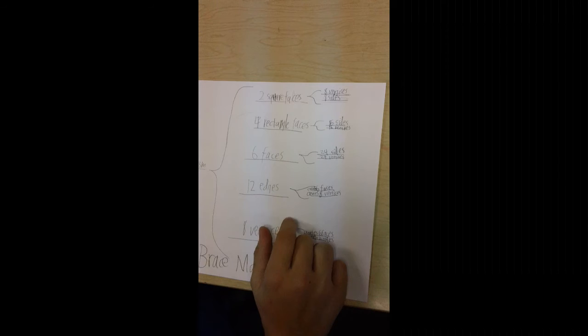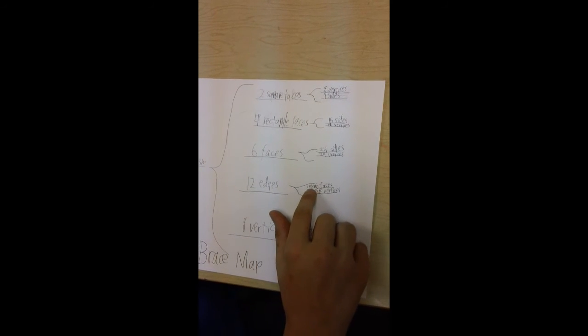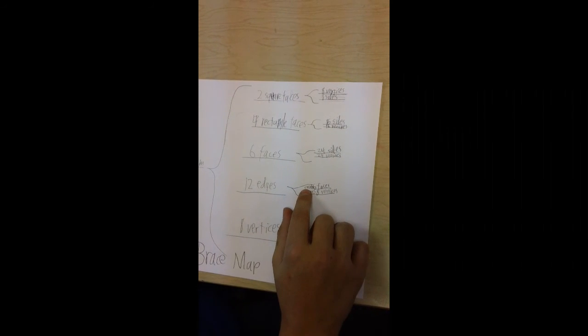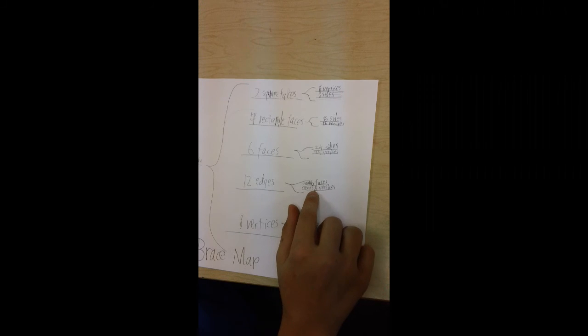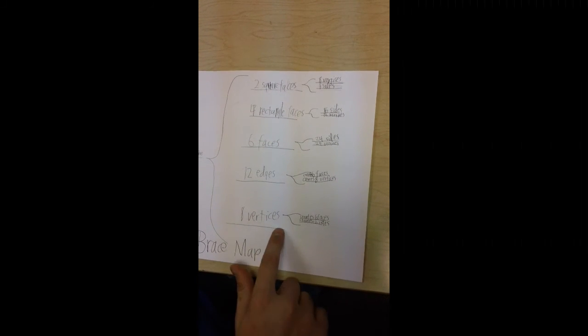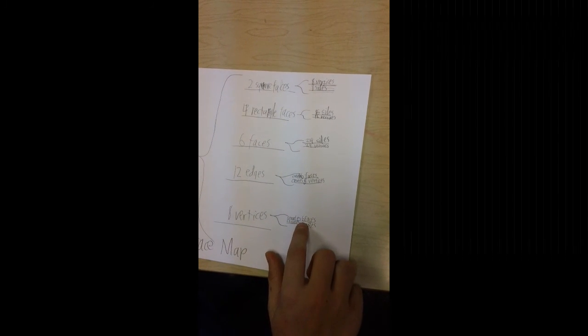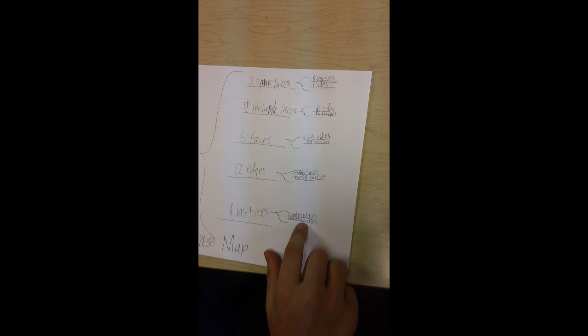Twelve edges - the twelve edges create six faces and eight vertices. The vertices create six faces and twelve sides.